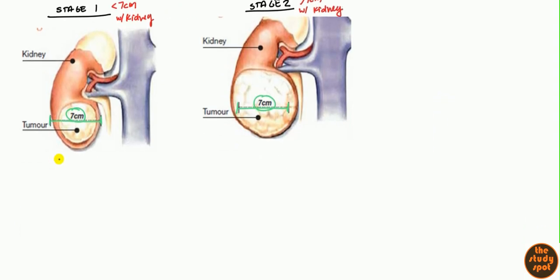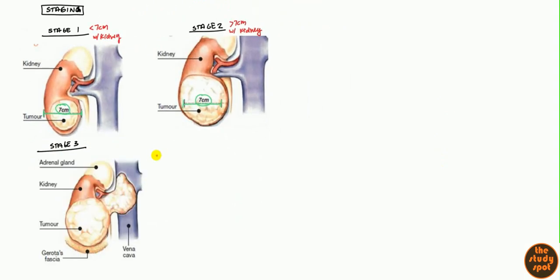When we get to stage three, things will change a little bit. This is when you start getting invasion. The first thing is it invades the renal vein and inferior vena cava. You can see that tumor right there going all the way into the inferior vena cava and the renal vein. It also can invade the adrenal gland. However, it does not invade the Gerota's fascia. So it'll be above the Gerota's fascia. That's a very important key difference between stage three and stage four.